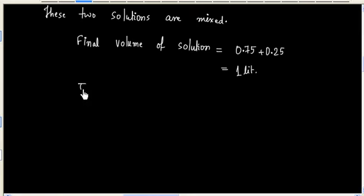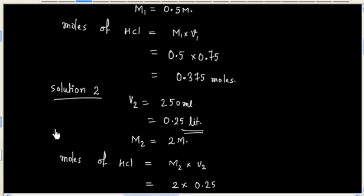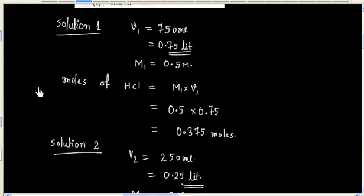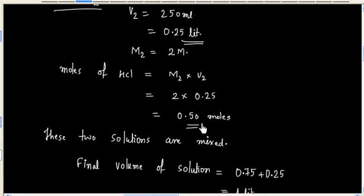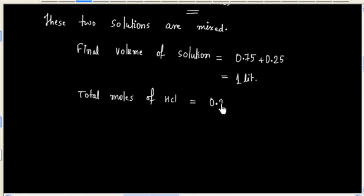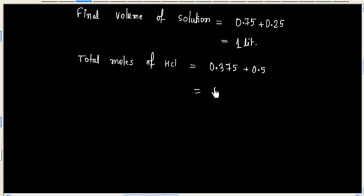We can calculate total moles of HCl, that is 0.375 plus 0.5. This is 0.875 mole.